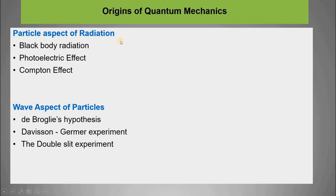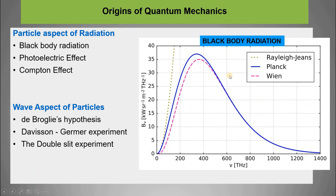Historically, classical theory began to fail. Experiments revealed phenomena that classical physics could not explain. The first example is black body radiation — the relationship between frequency and energy density — which led to the quantization of energy. The second is the photoelectric effect.